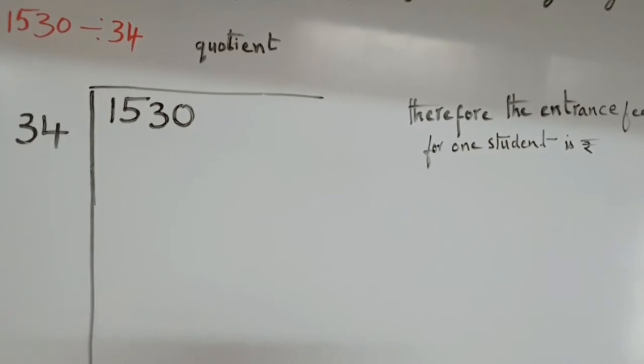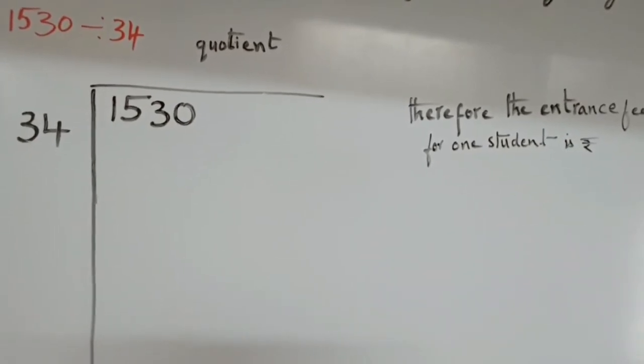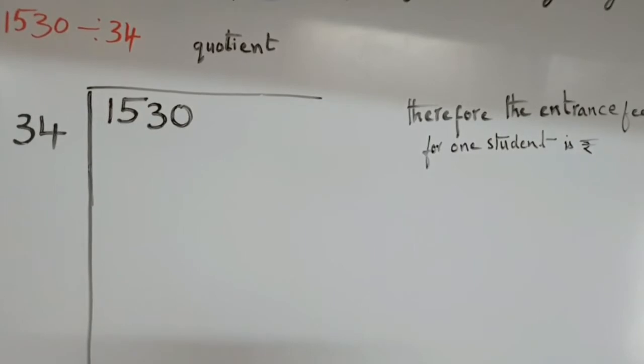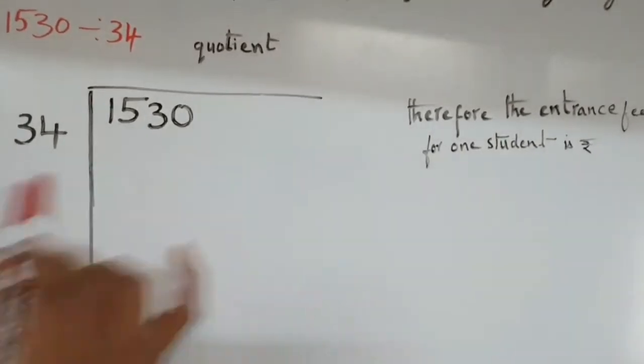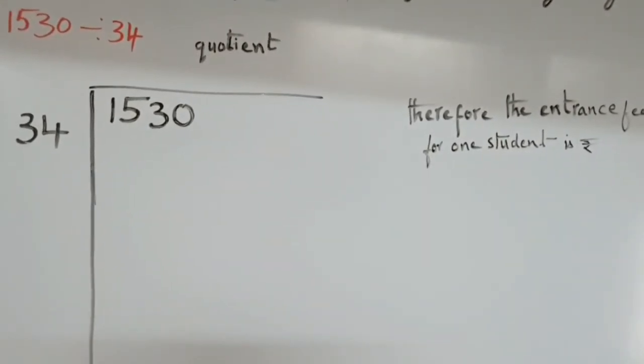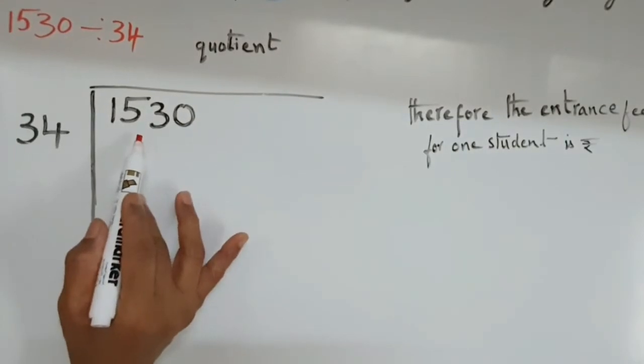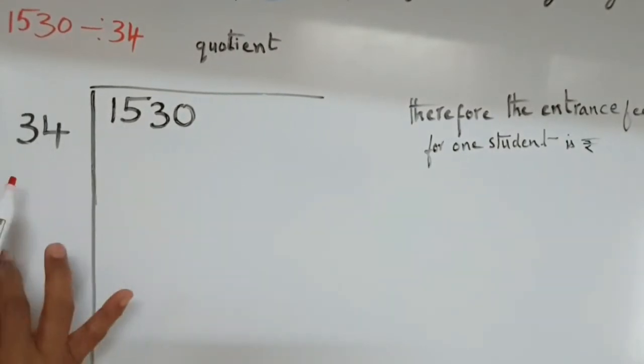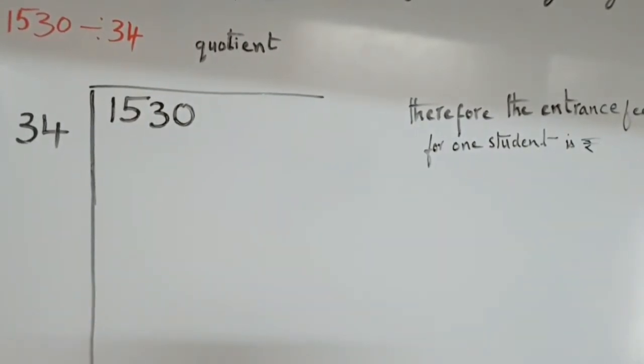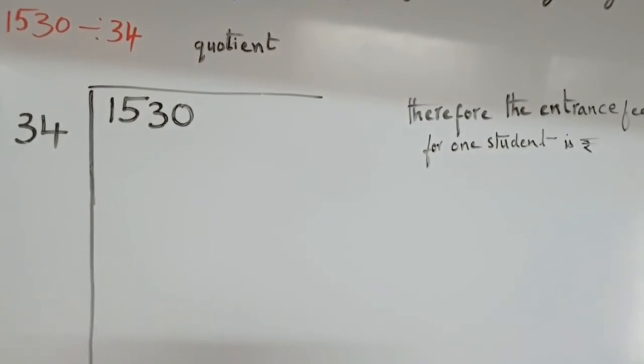When we divide by two digit number, we have to choose first two digit number from the dividend. Here our dividend number is 15. It is lesser than our divisor. What we have to do? We have to ask how many 34s in 15? Answer is none.